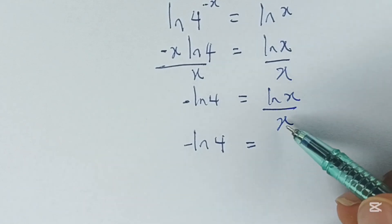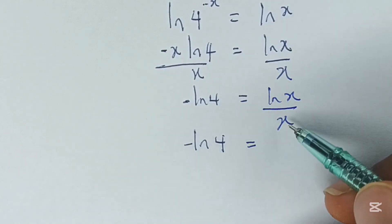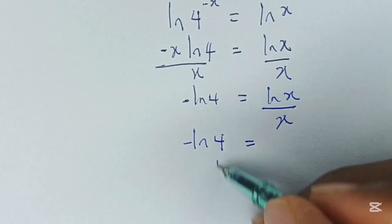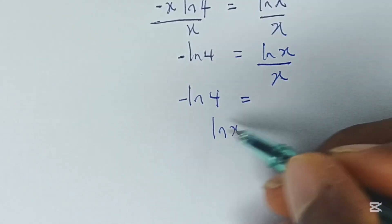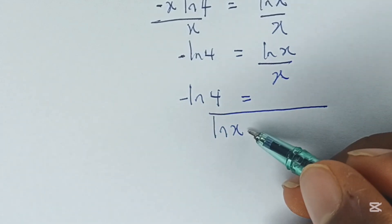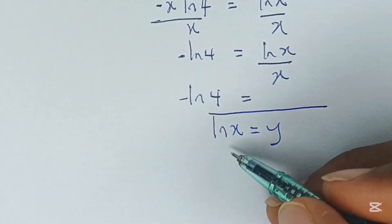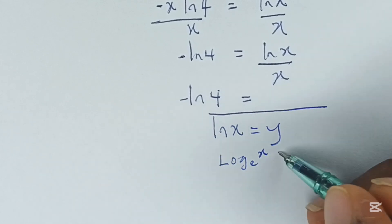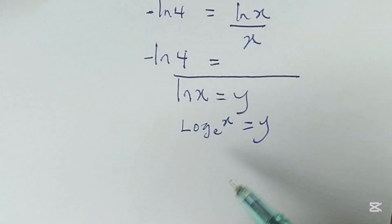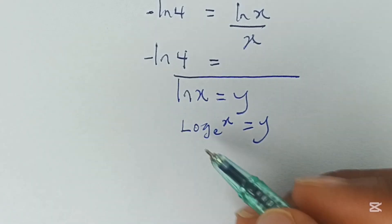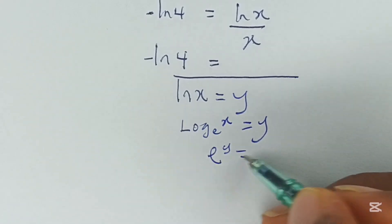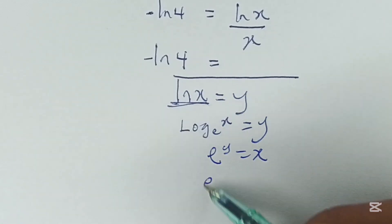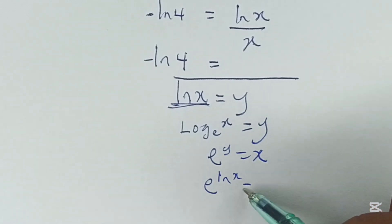At this point, we can rewrite x. If we have ln of x equal to y, then ln is the same thing as log to the base e of x equal to y. From here, you have that e raised to the power of y is equal to x. But recall that y is equal to ln of x, so we have that e raised to the power of ln of x is equal to x.